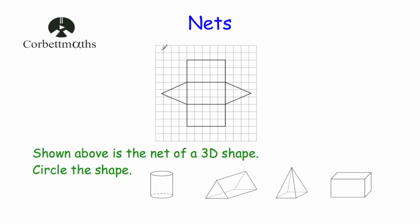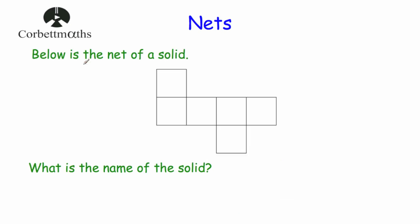Here's our first question. We've been given a grid showing the net of a 3D shape. As you can see it's got two triangles and three rectangles, and we've been asked to circle the shape that this is the net of. That would be the base, the two triangles which fold up, and then the two rectangles which fold to meet at the top — so that is the net of a triangular prism, not a cylinder, not a square-base pyramid, and not a cuboid.